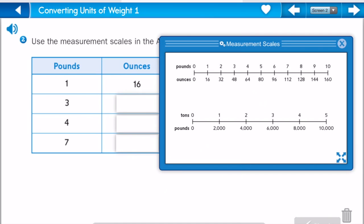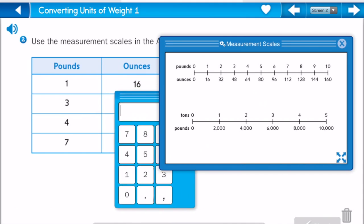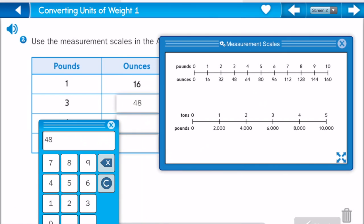So how many does 3 equal? 3 equals 48. Drag this over here.